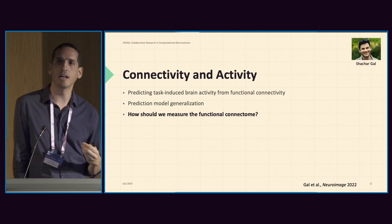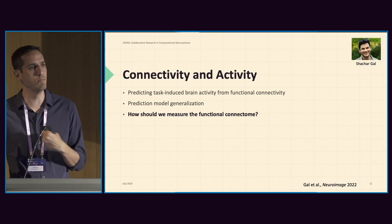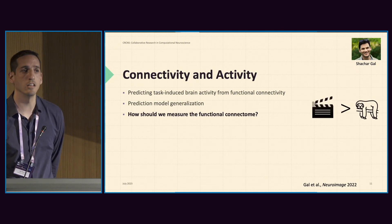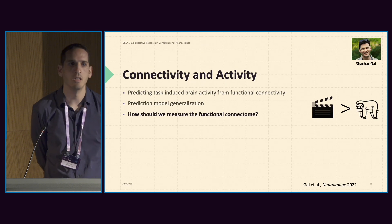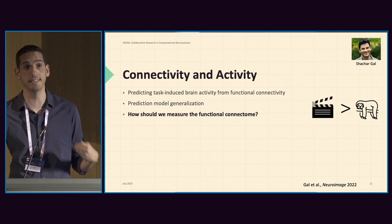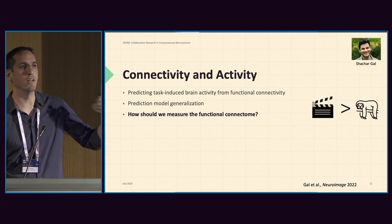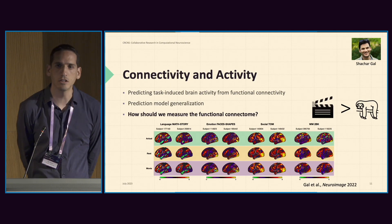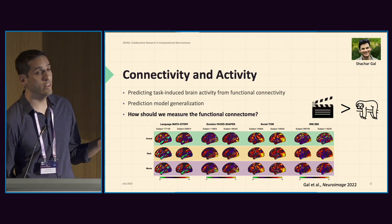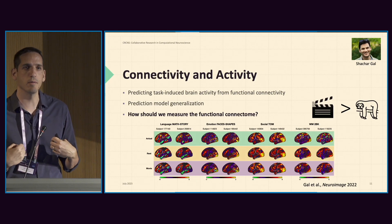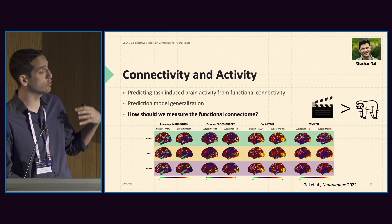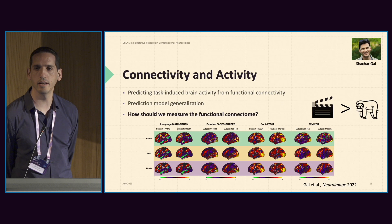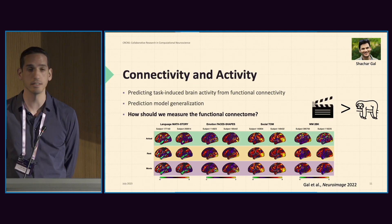We also did some work asking how we should measure the functional connectome as input to our prediction pipeline. It seems that naturalistic stimuli such as movie watching outperforms the traditional resting-state experiment in calculating the connectome, at least in the context of predicting task activity. We can see in the top row the actual brain activation and the predicted activation from connectivity measured from rest versus movie watching scans — and movie watching gives more accurate predictions. We can also quantify that and confirm the predictions are better.